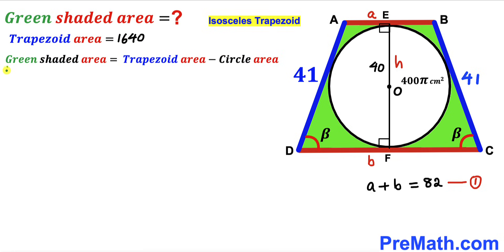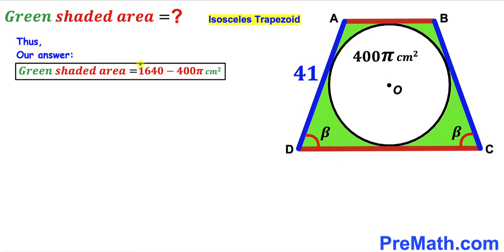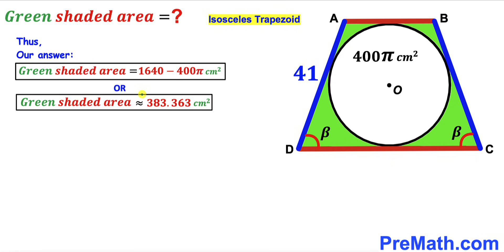For the final step, the green shaded area = trapezoid area − circle area = 1640 − 400π cm², which is approximately 1640 − 1256.64 ≈ 383.36 cm². That is our final answer.